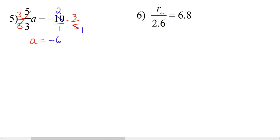Final question, we have r over 2.6 equals 6.8. In order to get r alone, we need to get rid of this 2.6. r is being divided by 2.6, so the way that we are going to undo that is we're going to multiply both sides of this equation by 2.6.